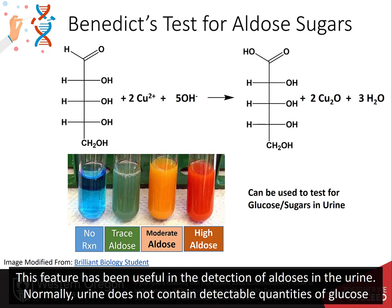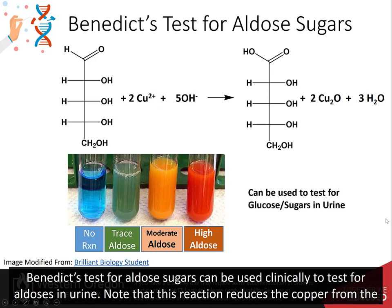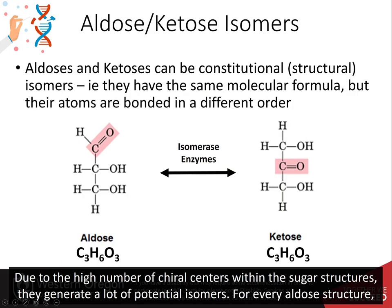Normally, urine does not contain detectable quantities of glucose or other sugar monomers. However, in disease states such as diabetes, glucose is excreted by the kidneys into the urine. The Benedict's test for aldose sugars can be used clinically to test for aldoses in urine. Note that this reaction reduces the copper from the 2+ state to the 1+ state, changing the color of the copper from blue to brick red. Partial reduction of the copper is seen as green to orange variations.